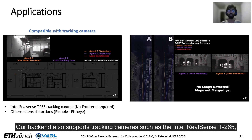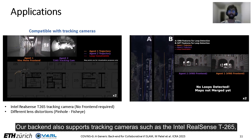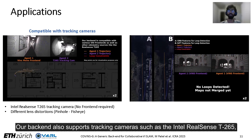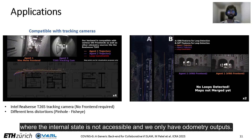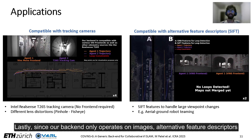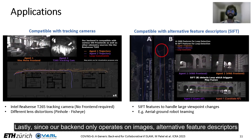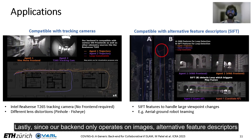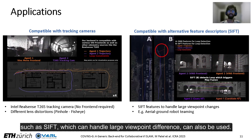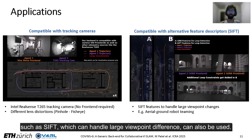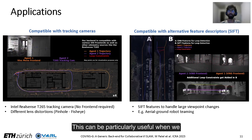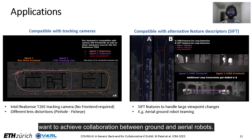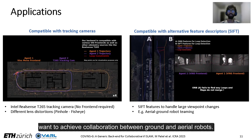Our backend also supports tracking cameras such as the Intel RealSense T265, where the internal state is not accessible and we only have odometry outputs. Lastly, since our backend only operates on images, alternative feature descriptors such as SIFT, which can handle large viewpoint differences, can also be used. This can be particularly useful when we want to achieve collaboration between ground and aerial robots.